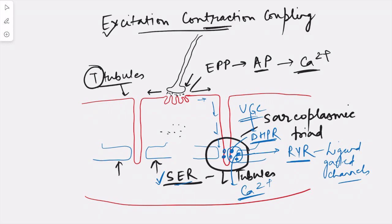In smooth muscle and cardiac muscle, the action potential itself causes entry of calcium — unlike skeletal muscle where action potential results from sodium ion entry. In smooth muscle, the depolarization phase involves calcium entry, and in ventricular or atrial action potential, calcium enters during the plateau phase. These calcium ions interact with the ryanodine receptors on the L-tubules — hence these are ligand-gated channels — causing further calcium release, known as calcium-induced calcium release.